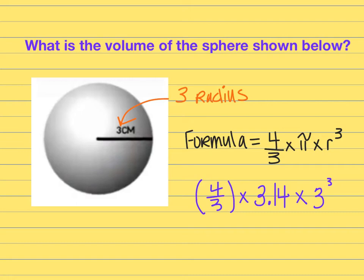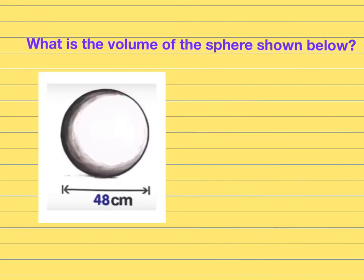The final answer after you type that in your calculator: the volume of this sphere is 113.04, and then it's measured in centimeters. Volume always has an exponent of 3 to represent the cubic units that would fill up the inside of the figure. The last example that we're going to look at in this video starts out telling you the distance all the way across the sphere.